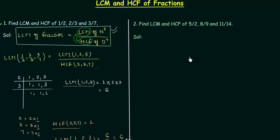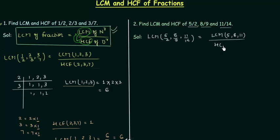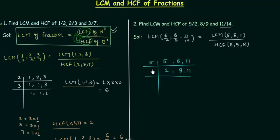Now we move to problem number 2: find LCM and HCF of 5/2, 8/9, and 11/14. For LCM, we need LCM of numerators 5, 8, 11 divided by HCF of denominators 2, 9, 14. Using the division method, LCM of 5, 8, 11 equals 5 × 8 × 11, which is 440.